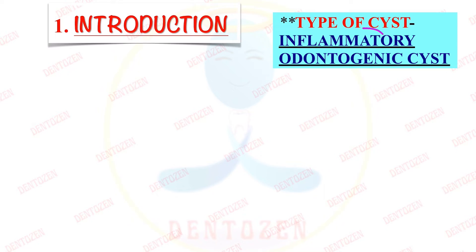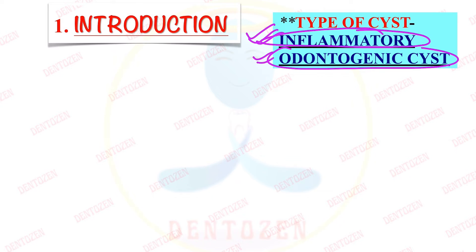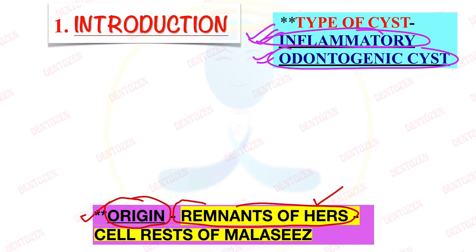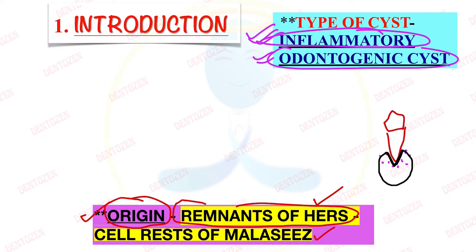The most important point for radicular cysts is that it is a type of inflammatory odontogenic cyst — inflammatory because the cause is inflammation, and odontogenic because it is arising from tooth-forming tissues. An important viva question: what is the origin of radicular cysts? It is coming from remnants of Hertwig's epithelial root sheath, also known as cell rests of Malassez, which are located in the periodontal ligament of a tooth.